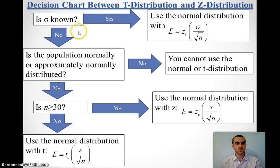If it's not known, we want to ask ourselves, do we know that the population is normal or approximately normal? If we don't know that, we can't do anything. We just have to stop. If we do know that that's been stated somewhere in our problems, we want to look at the problem and say, what's our sample size?